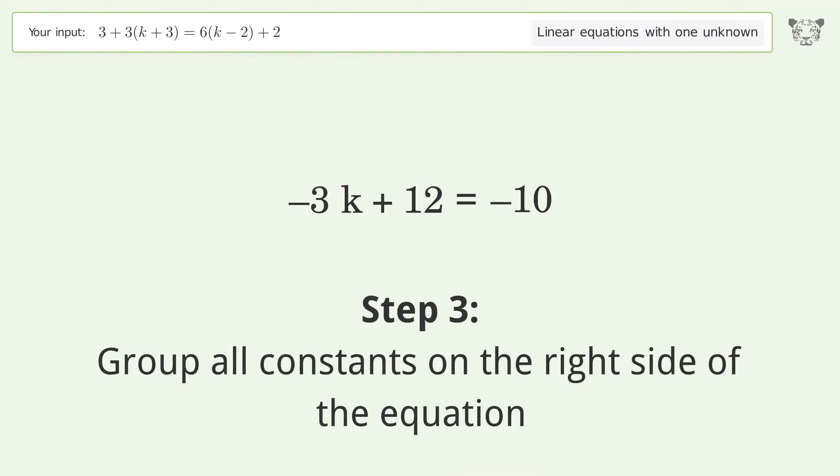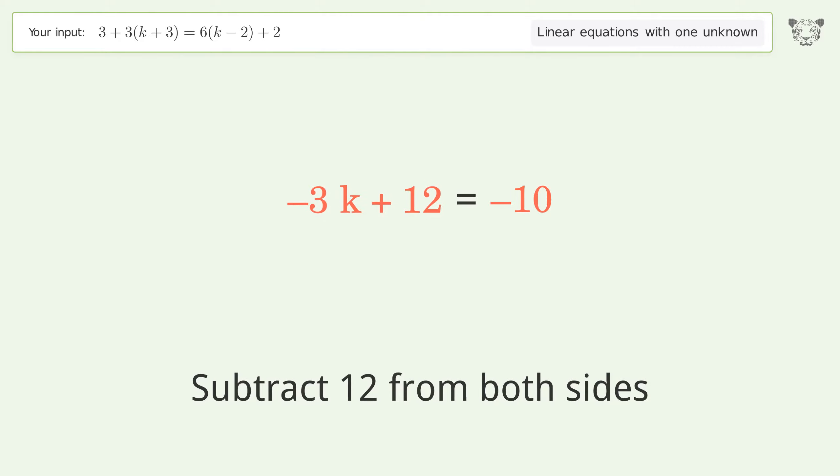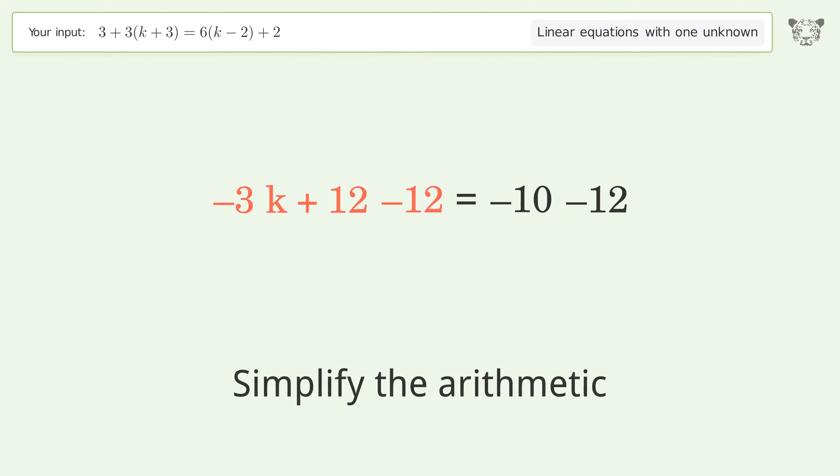Group all constants on the right side of the equation by subtracting 12 from both sides. Simplify the arithmetic.